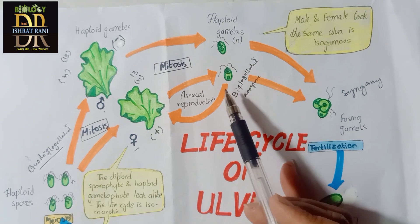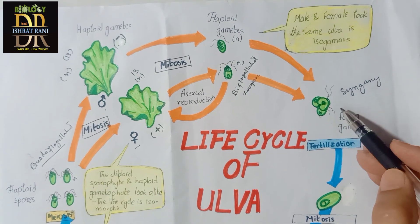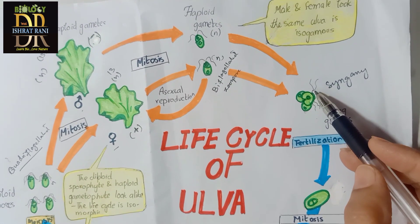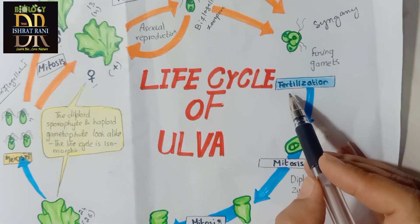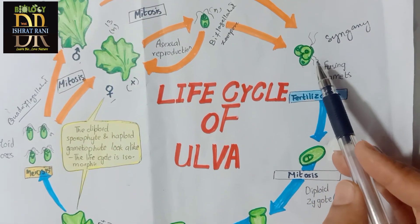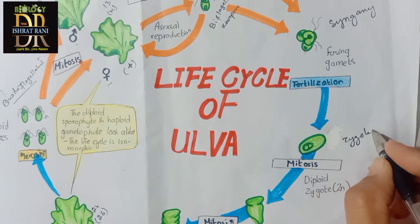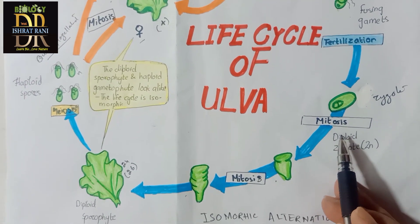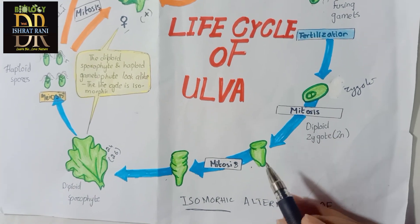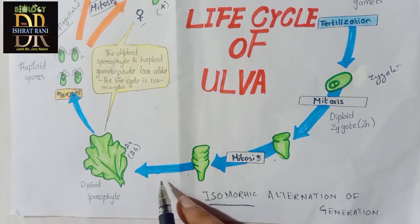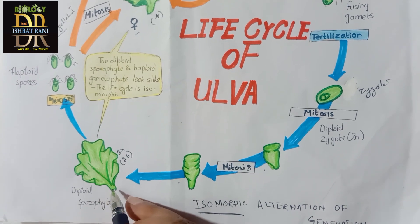Both haploid gametes are biflagellated. When these two haploid zoospores fuse together, the process is known as syngamy. Their flagella dissolve, and by fusing they form a zygote — this process of two gametes fusing is also known as fertilization. The zygote then undergoes mitotic division, increasing the cell number, and then forms the diploid sporophyte again.